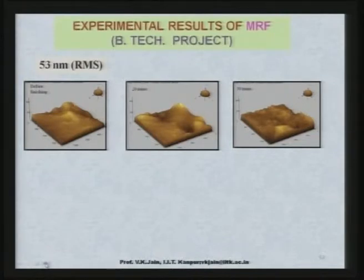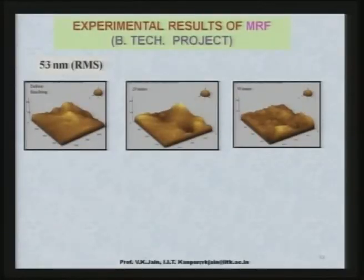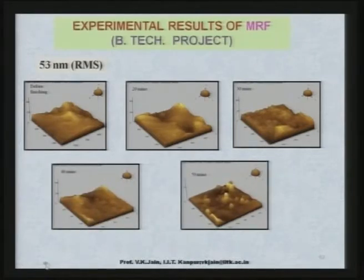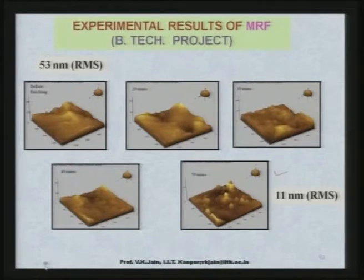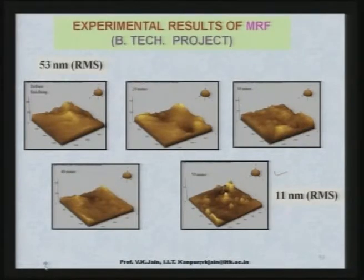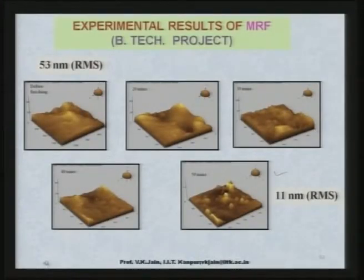At IIT Kanpur, BTech students developed a similar setup, conducted experiments, and took lenses used for bearings. Initial surface roughness was 53 nanometer; after 50 minutes of finishing they found surface roughness of just 11 nanometer — a substantial reduction of around 5 times in 50 minutes. 11 nanometer is a very good surface finish provided there are no defects, and since the forces acting on the component are very low and deterministic, damage or defects in the finished lens can be minimized.